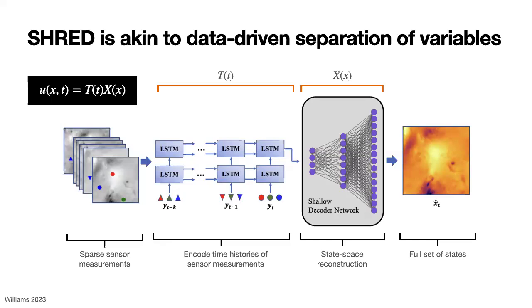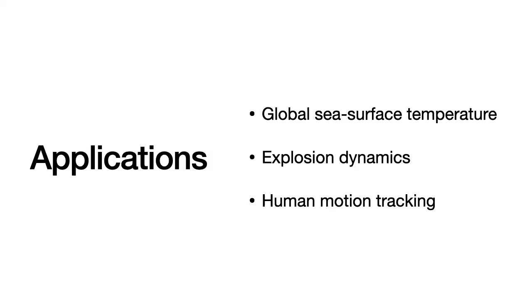Now that we've introduced the framework, there are a few different applications implementing the shallow recurrent decoder with systems that require a mobile sensing paradigm. The three I'm going to talk about today are global sea surface temperature, explosion dynamics, and human motion tracking. These have nothing to do with each other except that they are complex dynamical systems that need mobile sensing. The first two applications use data generated from simulations, and the final application uses real-world experimental data from the biomechanics community provided as open source datasets.